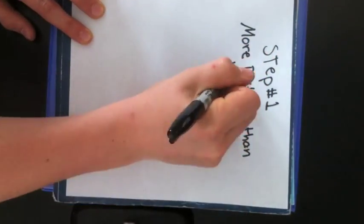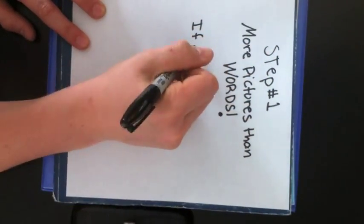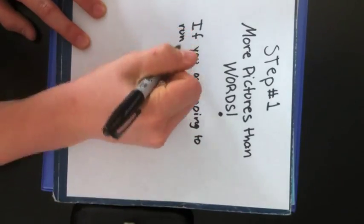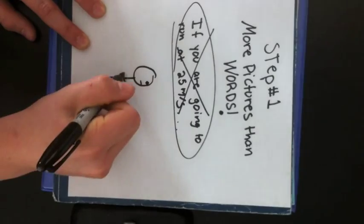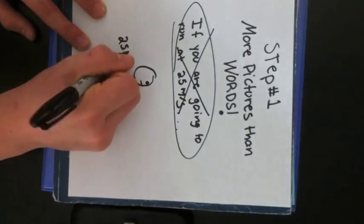Step one, you must use more pictures than words. Instead of writing out a long equation explaining something, draw it and draw something doing the action you were trying to explain.